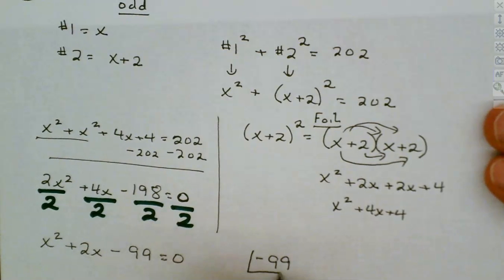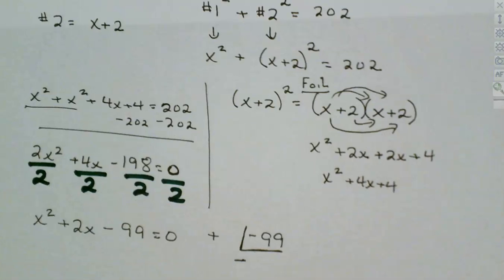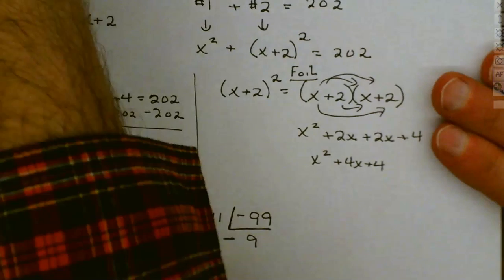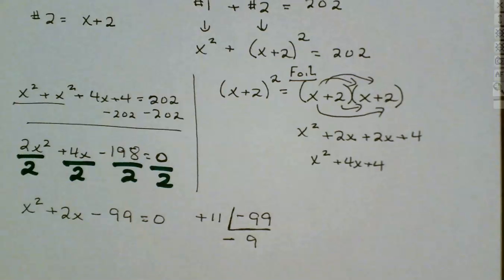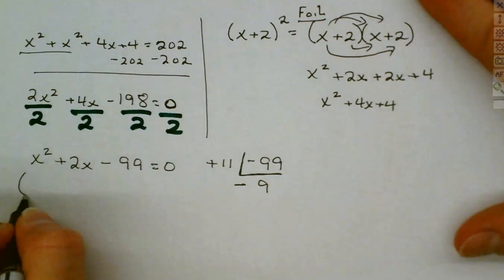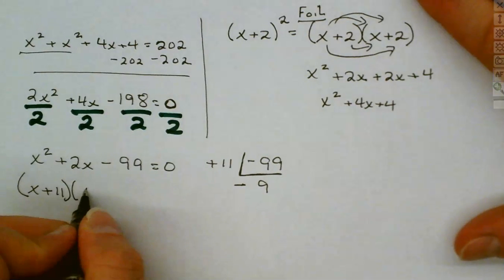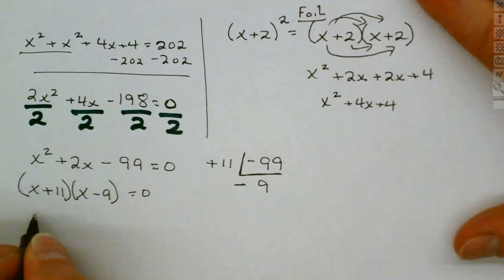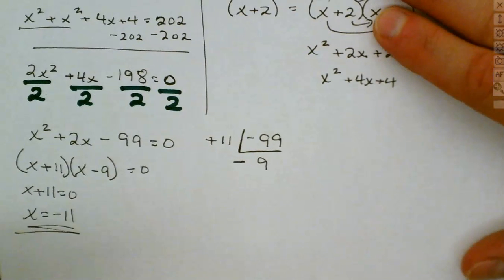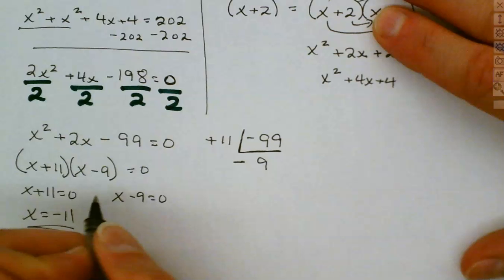99 goes in the box and it is negative, so the signs are different — the larger one is positive. What two numbers work? Positive 11 and negative 9. Be careful: you have to set it to zero, so signs will change. Write it out as x plus 11 times x minus 9 equals 0. So x plus 11 equals 0 gives x equals negative 11; x minus 9 equals 0 gives x equals 9.